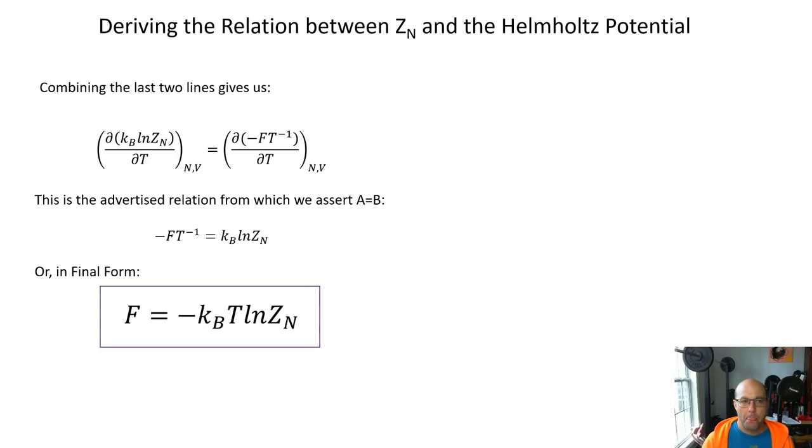So we'll combine those last two lines. Partial with respect to T of kB ln Z at constant N and V is equal to partial of negative F T to the minus one with respect to T at constant N and V. And so we'll equate these two things inside these inner parentheses that's this line and then just do a little bit of arranging to get that the Helmholtz potential is equal to negative kB T ln of Z sub N.